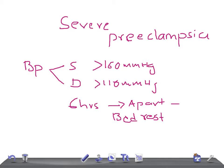So this is the blood pressure, systolic and diastolic. Systolic should be more than 160 mmHg, or diastolic more than 110 mmHg, or higher on two occasions, at least six hours apart, while the patient is on bed rest.